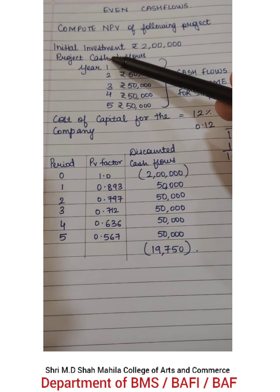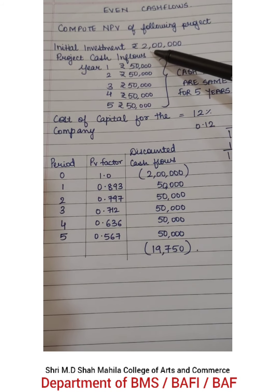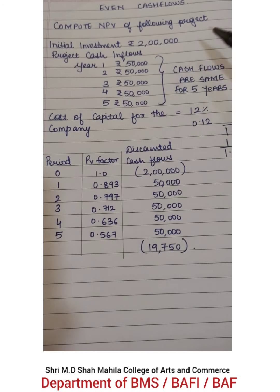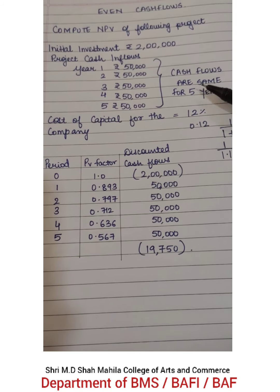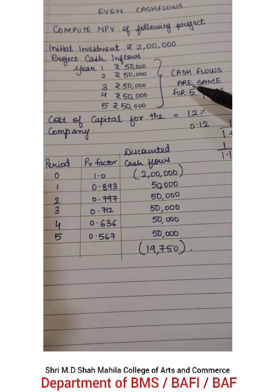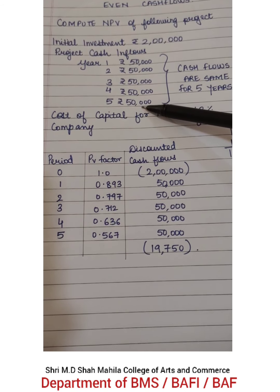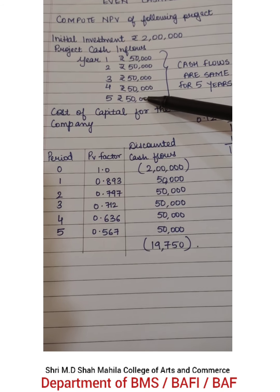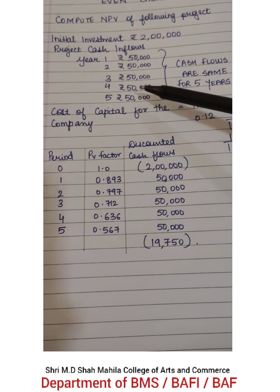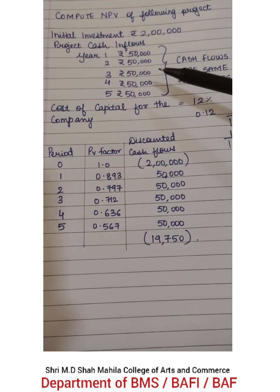Suppose the initial investment is rupees 2 lakh and project inflows for 5 years which are given are exactly the same. Today's calculator technique will work only and only when the cash flows are the same for 3 years, 5 years, or 10 years. So you can use this shortcut on the calculator. First let us see what was the basic concept.